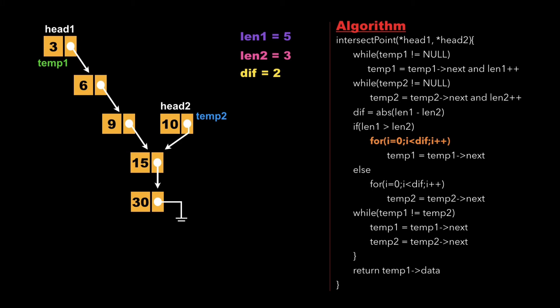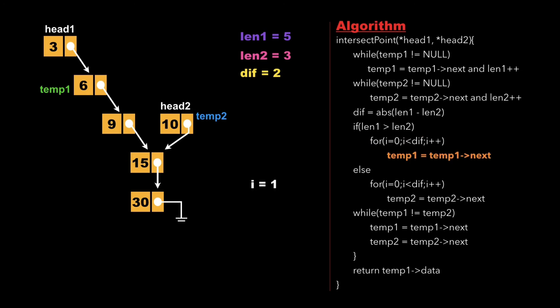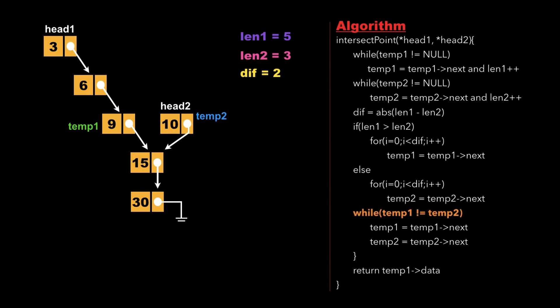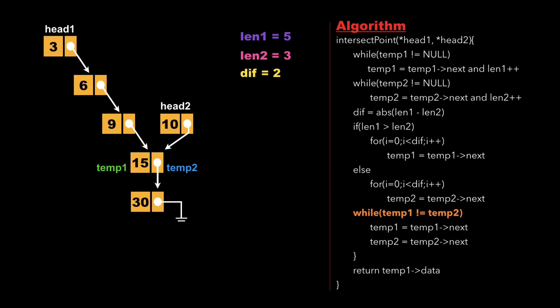Using a for loop from i=0 to difference, we update temp1 as temp1.next twice. Once i reaches 2, which is not less than difference, we exit the for loop. We then start a while loop checking whether temp1 and temp2 are not equal. Since they aren't equal, we simultaneously update temp1 as temp1.next and temp2 as temp2.next. On the next check, both pointers point to the same node, so we exit the loop and return temp1.data, which is 15 — the intersection point.